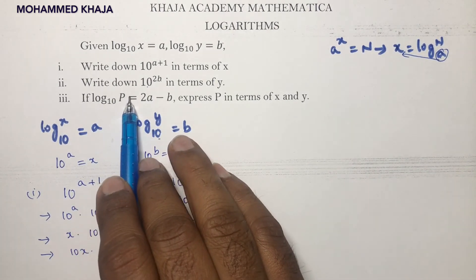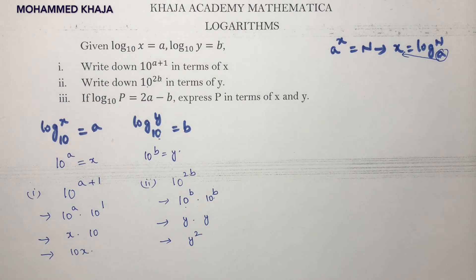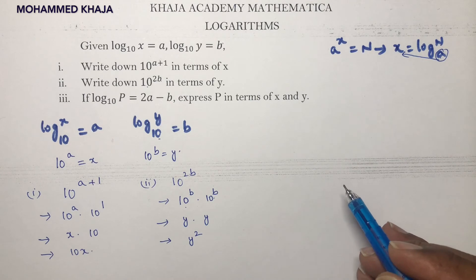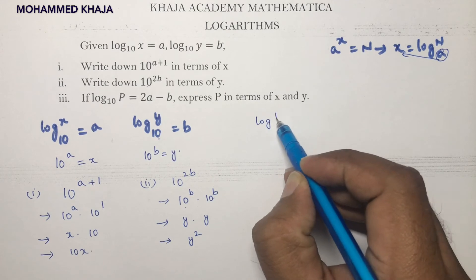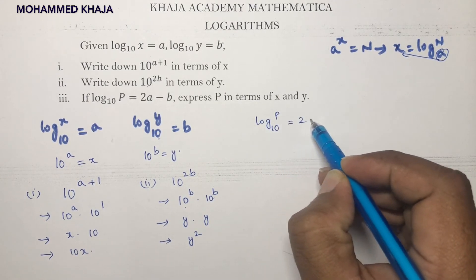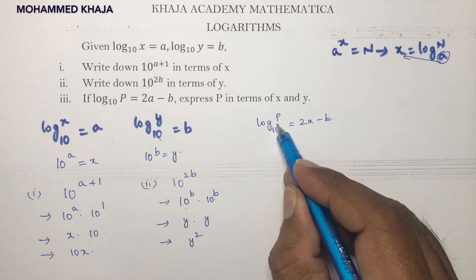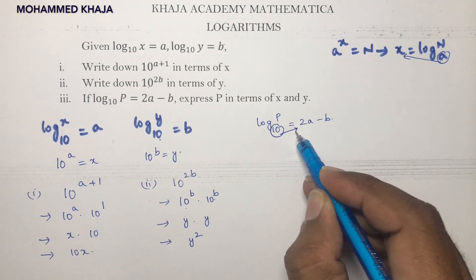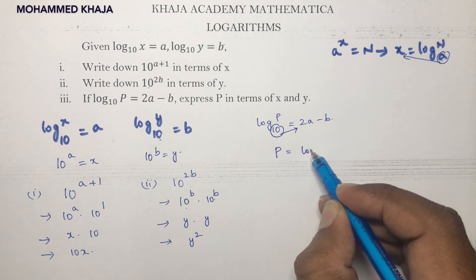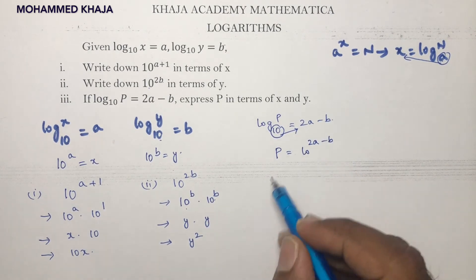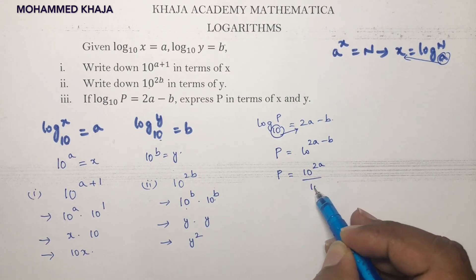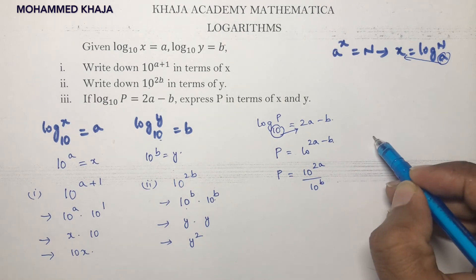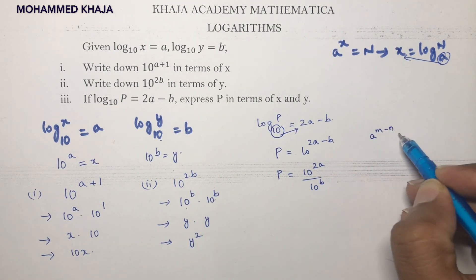Third part: log p to the base 10 equals 2a minus b. Converting to exponential form, p = 10^(2a-b), which equals 10^(2a) divided by 10^b, using the formula a^(m-n) = a^m / a^n.